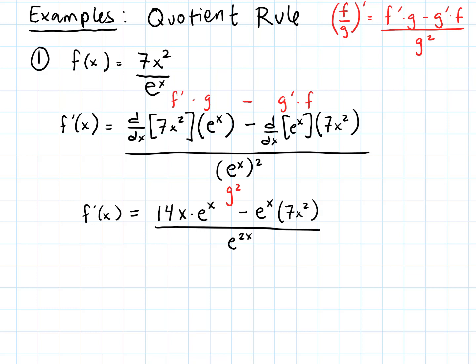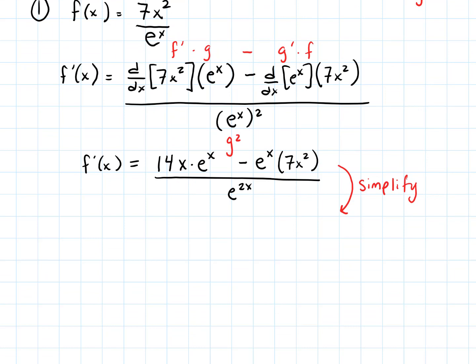Now taking those derivatives: f′(x) becomes 14x times eˣ, because the derivative of 7x² by the power rule is 14x, and the derivative of eˣ is eˣ. So we get 14x·eˣ minus eˣ·7x², all over eˣ squared — or equivalently e^(2x), since squaring eˣ multiplies the exponent by 2.